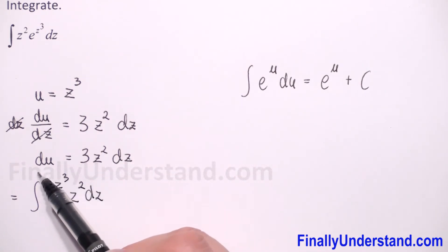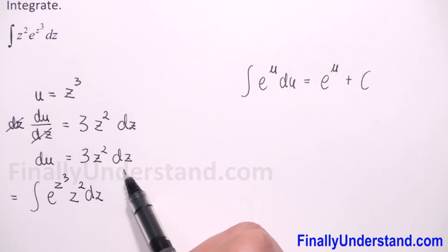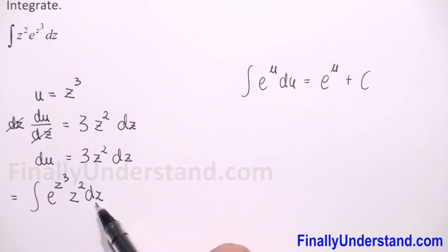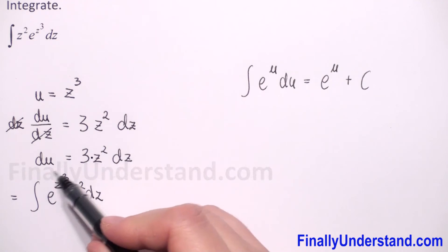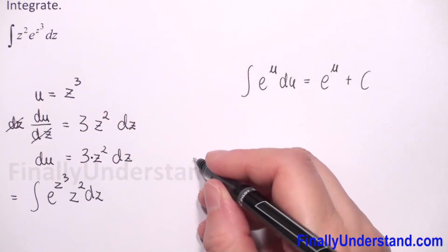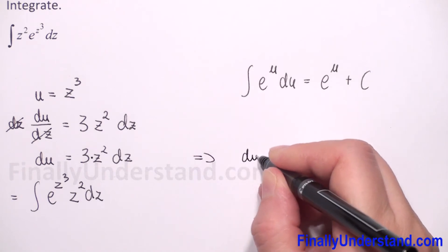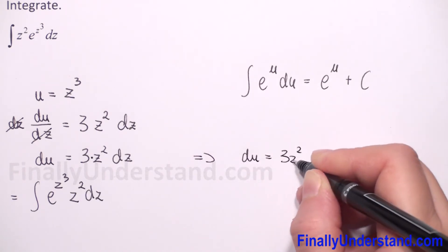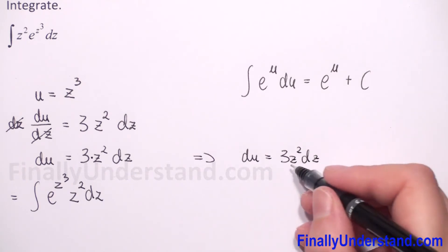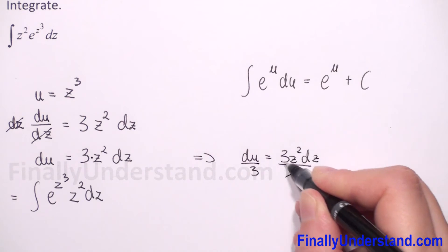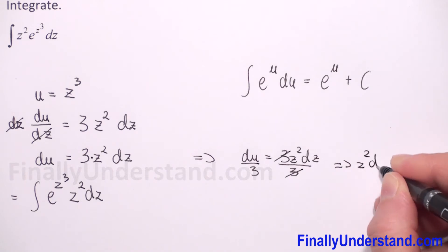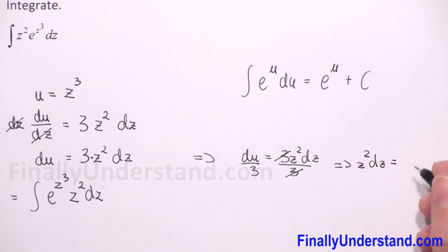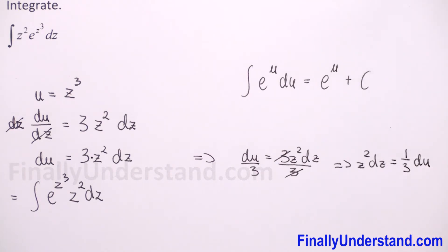We found that du is equal to 3z squared dz, but we have only z squared dz. Because we have multiplication, to find z squared dz I will divide both sides of our equation by 3. So du divided by 3 equals z squared dz, which means z squared dz is equal to one-third du.